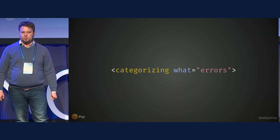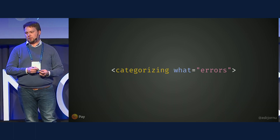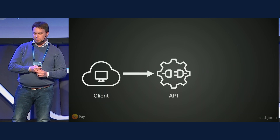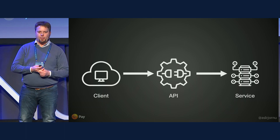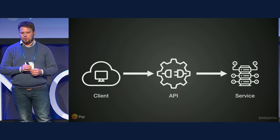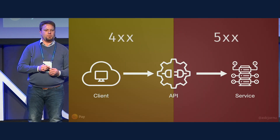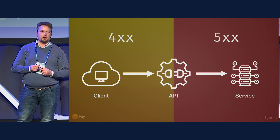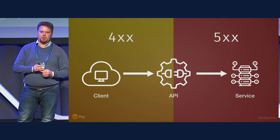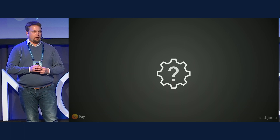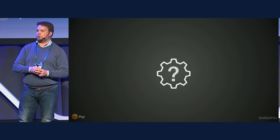To get a better grip of how you can treat errors in your application, here's a tip on how to categorize them. If we take a look at a regular request coming from a client into an API and then to a back-end third-party service, any number of things can go wrong in this request and response chain. We can divide this in two: everything on the left-hand side of the diagram is a 400 error, and everything on the right-hand side is a 500 error. The problem is how do you draw the line inside your API?